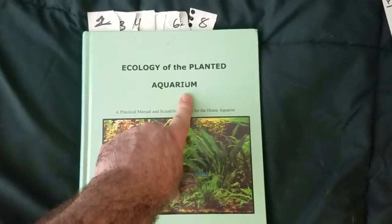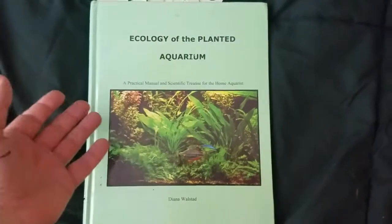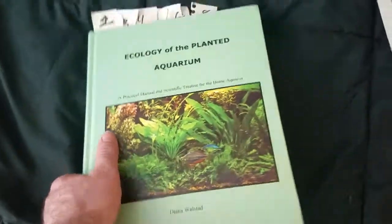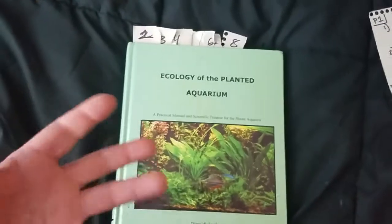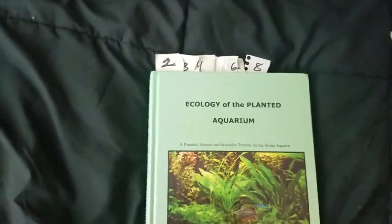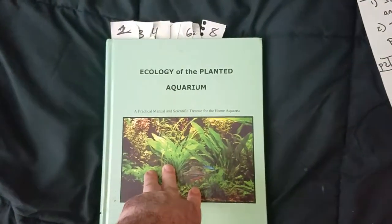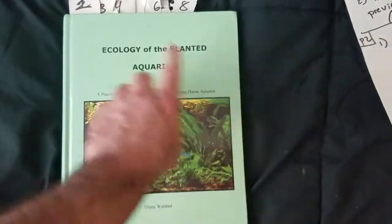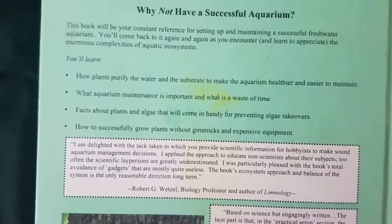So if you think, well, I don't want to do a Walstad tank, so I don't need this book — it's not about the Walstad Method. Although she does describe the Walstad Method and aspects of what make it the Walstad Method, such as using potting soil and potting mix as a substrate. But this is not a book about the Walstad Method; it's about ecology and planted aquariums. The book says you will learn how plants purify the water and substrate to make the aquarium healthier and easier to maintain.